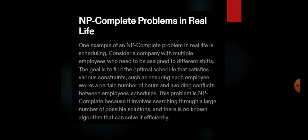What is the NP complete problem in real world? One example for NP complete problem in real world is scheduling. Consider if you are having a company with multiple employees who need to be assigned different shifts. The goal is to find out the optimal schedule that satisfies various constraints such as the employee works a certain number of hours and avoid conflicts between the employee schedules. This problem is an NP complete problem because it involves searching through a large number of possible solutions and there is no known algorithm that solves it efficiently.